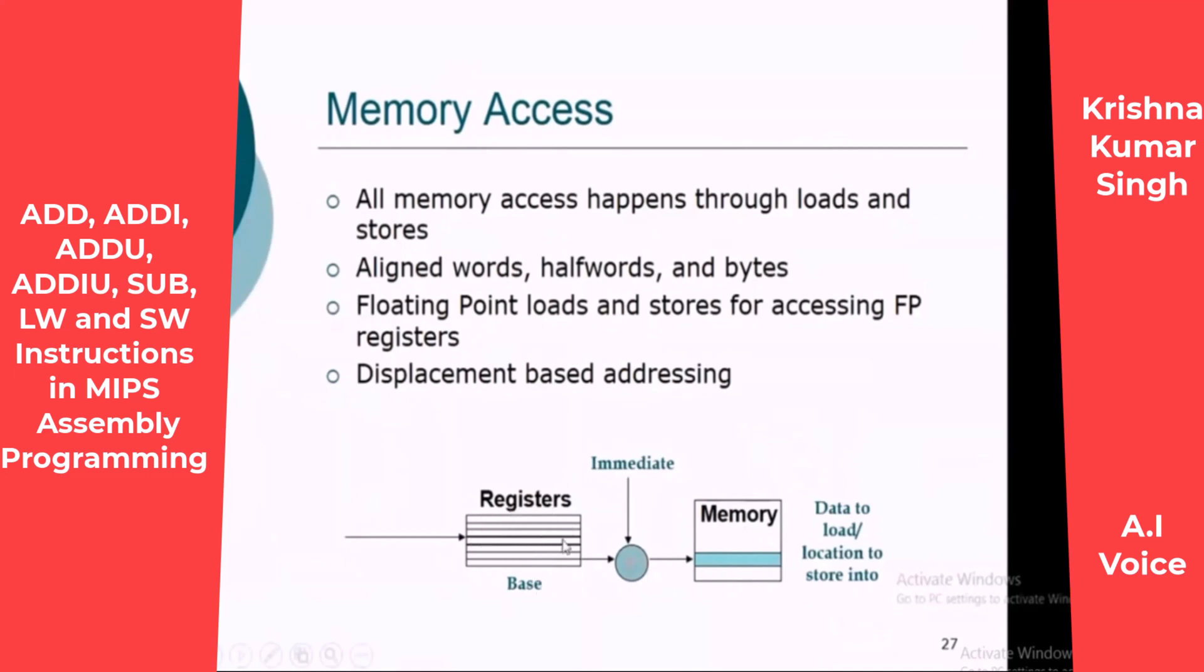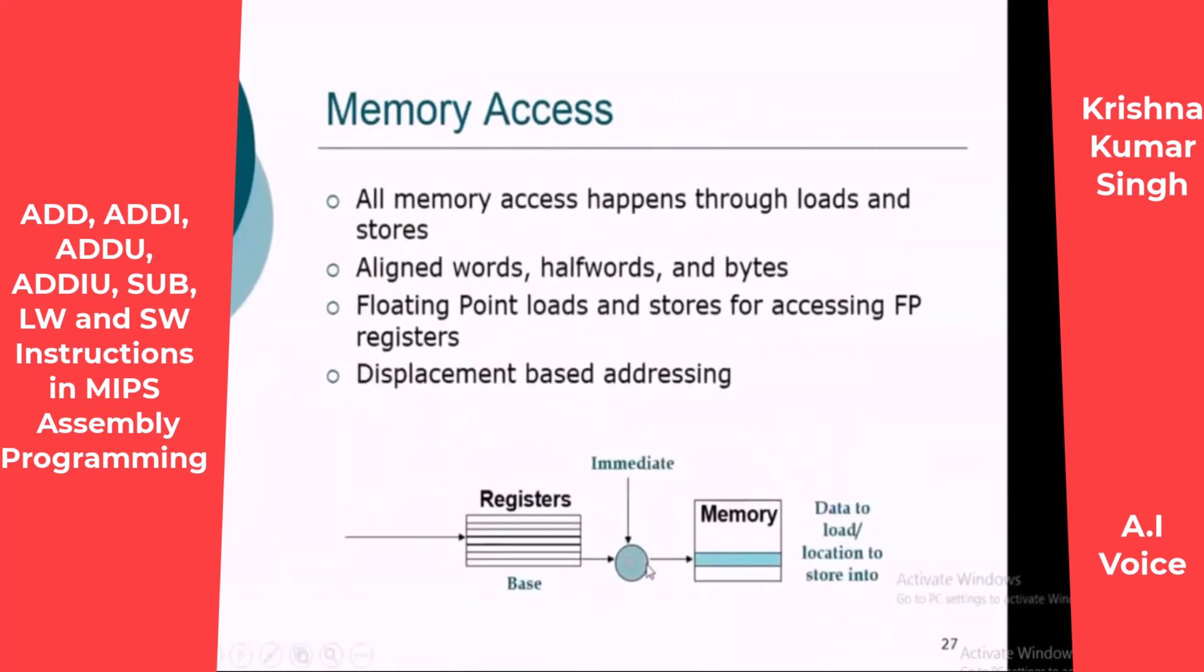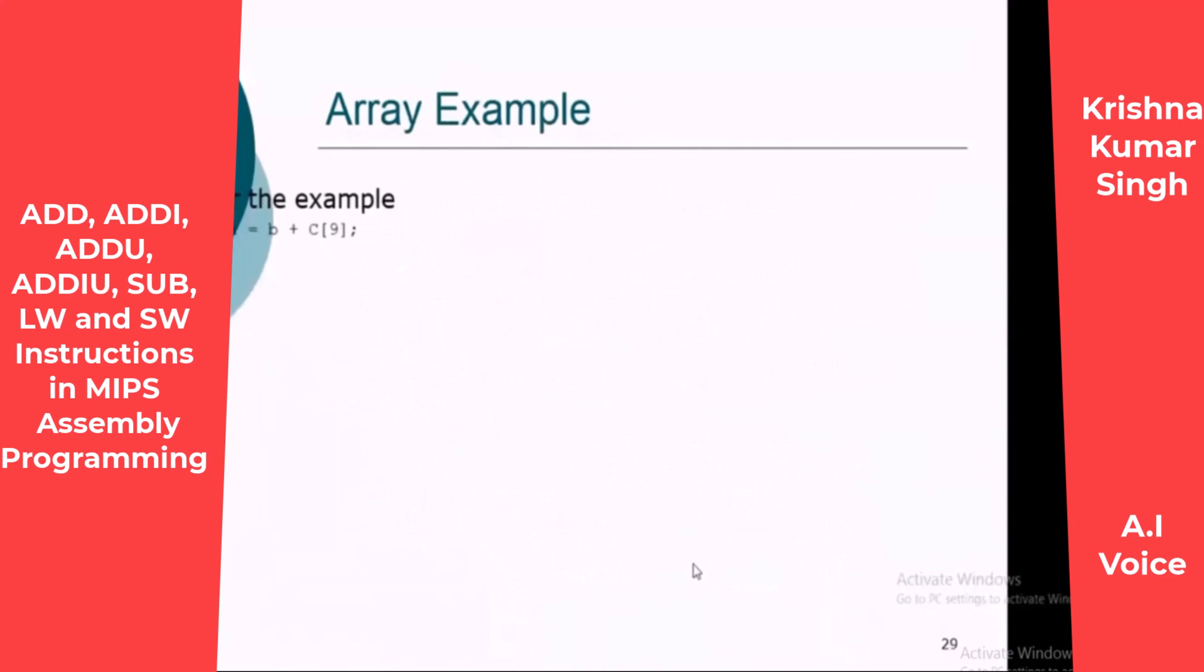As we can see here, as the address to refer to the memory and load that memory location. To compute that location, the base register contains a number. That number will be added with the immediate value that we have here in the offset part. And then the result will be used as the memory address.